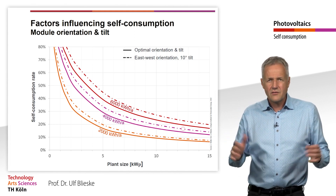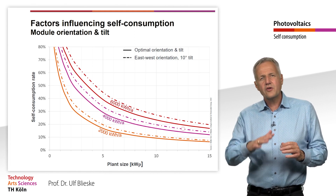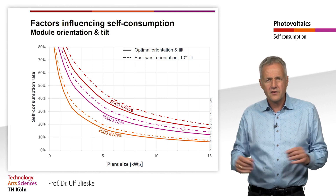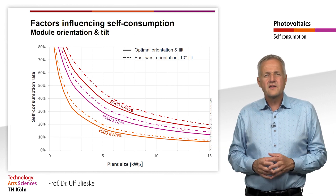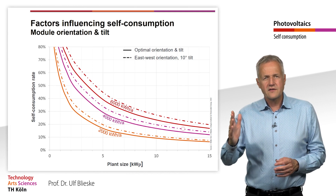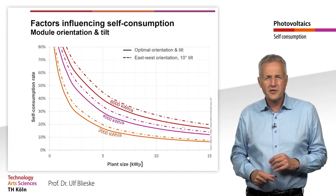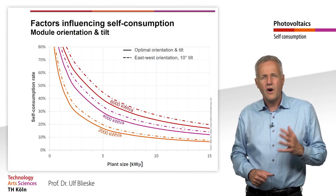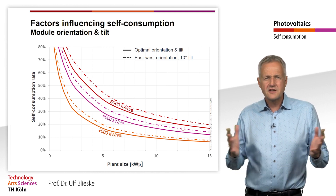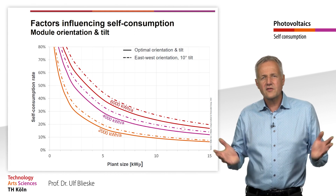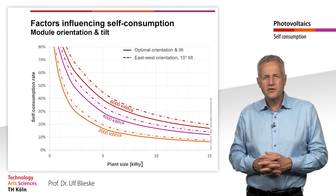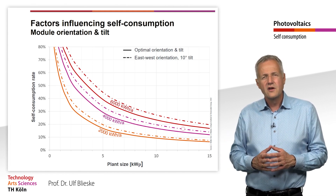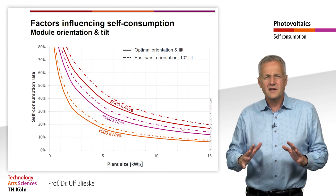In addition, with an east-west-oriented system, the temporal distribution of the generation is somewhat stretched towards the morning and evening hours. Overall, this increases the self-consumption rate for an east-west orientation plant by about 5% compared to a plant of the same size with a southern orientation. However, it must be taken into account that with east-west systems, often larger systems with higher power outputs are installed, which lowers the self-consumption rate again somewhat.